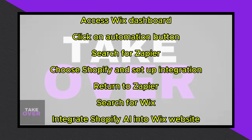Begin by accessing your Wix dashboard and locating the automation button on the left side of the screen. Then click on New Automation and search for Zapier. If it's not available, visit zapier.com and create a new Zap.